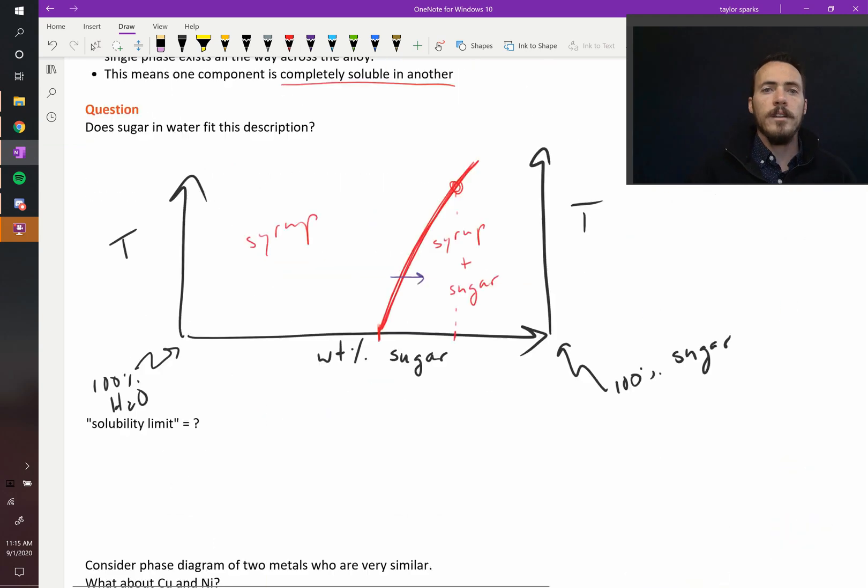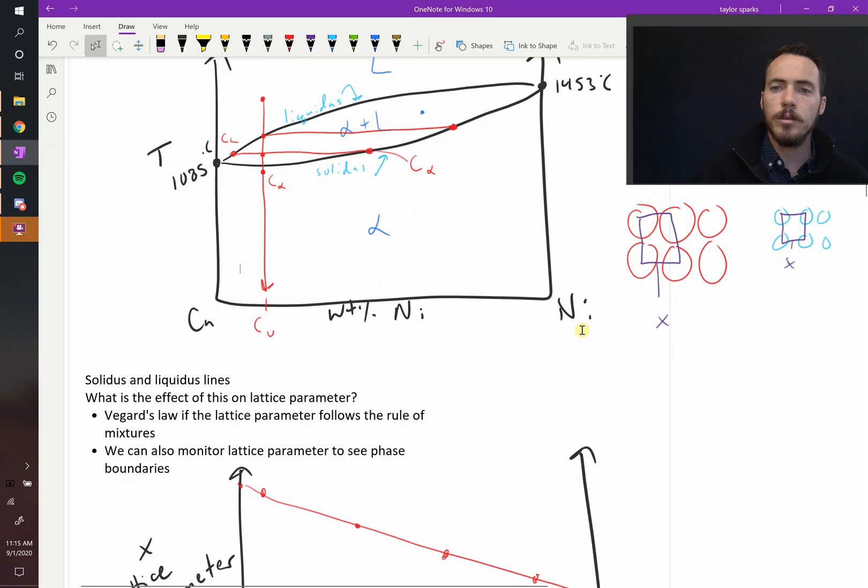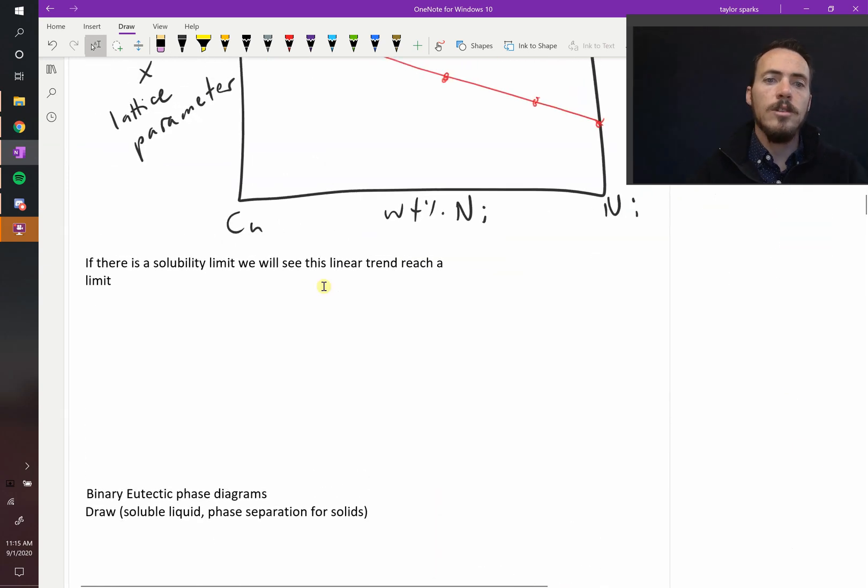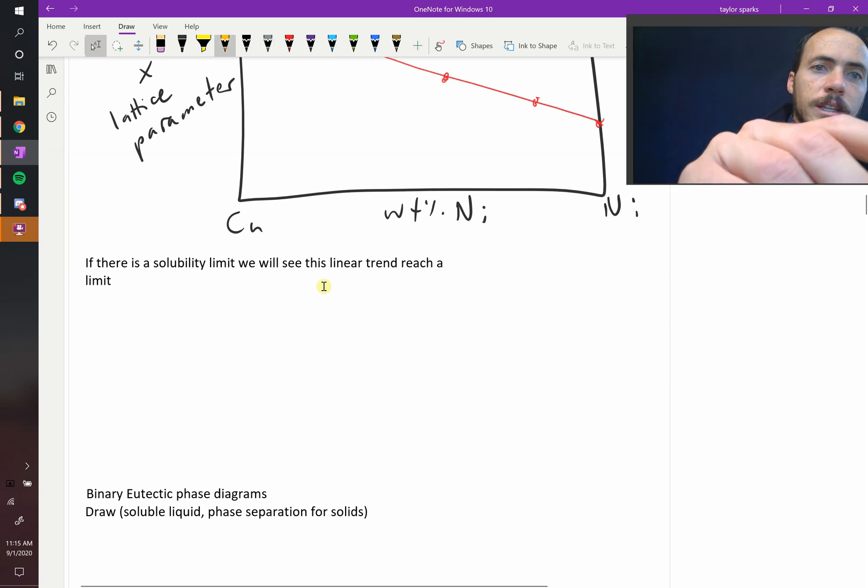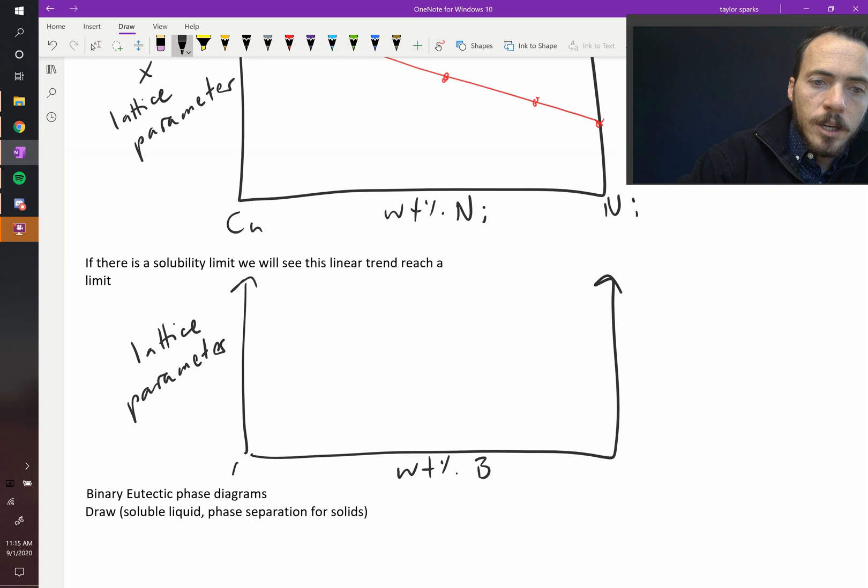Now, let's go back to this scenario. What if there was a solubility limit? Let's say that nickel was not completely soluble in copper. How would this picture change? You'd see a linear trend, but it would reach a limit. So again, let's draw this. So we're plotting our lattice parameter versus the weight percent of component B in A, so there's whatever A and B are, whatever elements those are, you would see things like this.